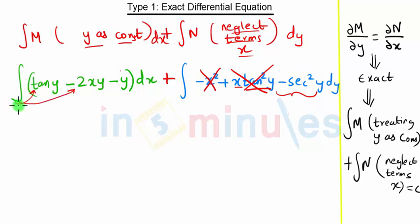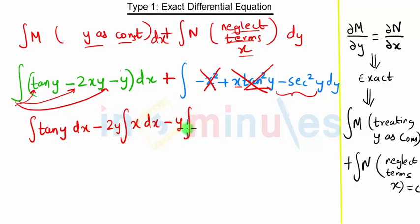integration sign inside the bracket. So we will get integration of tan y into dx minus 2y integration of x dx minus y integration of dx plus minus x square y dy. Its integration, in this we are